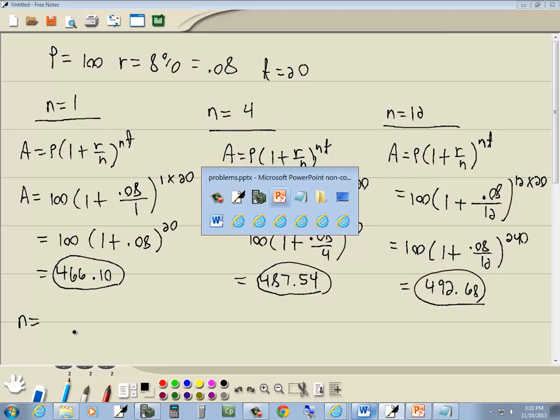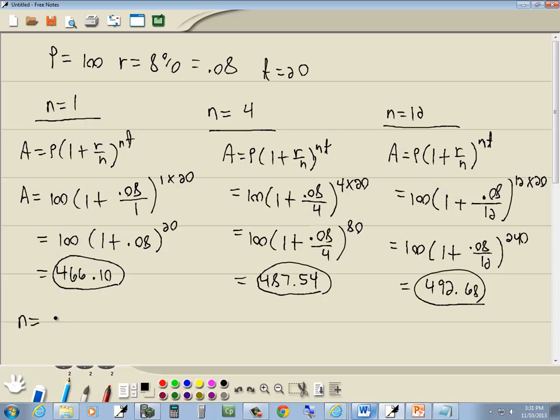And then our next one is n is equal to 365. Again, we'll plug in what we're given. A is equal to P times 1 plus R over n to the nt power.